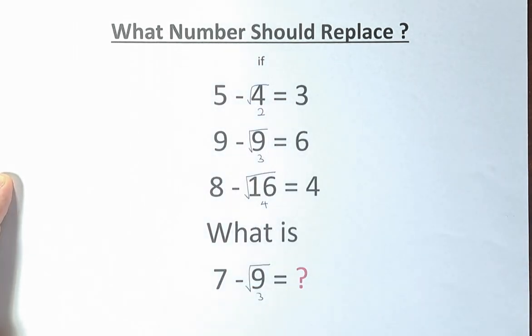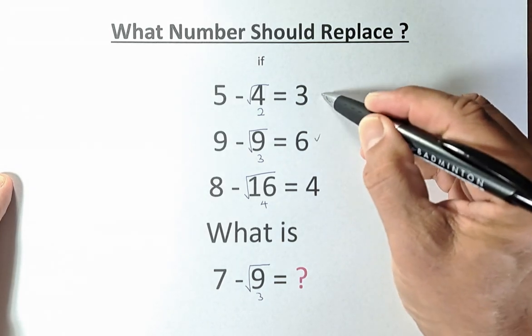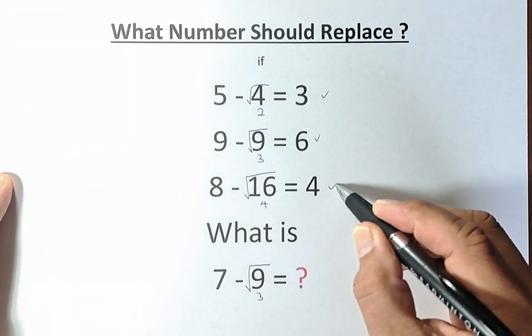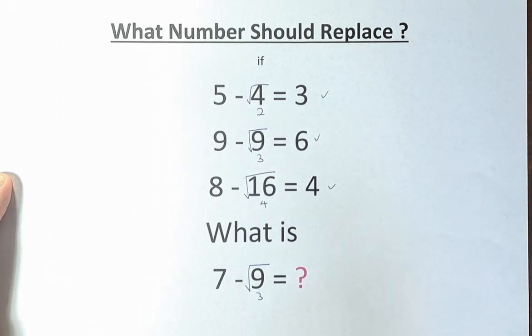5 minus 2 is 3, 9 minus 3 is 6, and 8 minus 4 is 4. So what then is 7 minus 3?